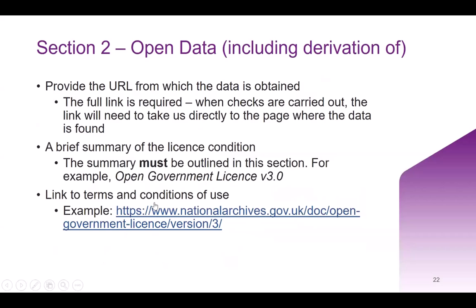Within section two, if you've classified your data as either original open data or open data bespoke, you need to provide the URL from which you obtained the data set and double-check that the link actually works. You also need to provide a brief summary of the license conditions — usually open data is shared under an open government license or Crown copyright license — and provide a link to that license so we can verify it applies to your data set.